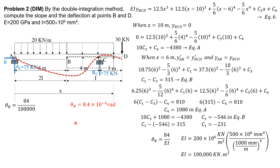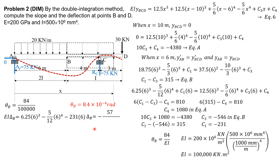For delta B, substituting X equals 6 into equation 3: EI delta B equals 6.25 times 6 cubed minus 5/12 times 6 to the 4th plus C sub 1 (negative 231) times 6. So delta B equals negative 576 over 100,000 meters, which converting to millimeters gives delta B equals negative 5.76 mm.